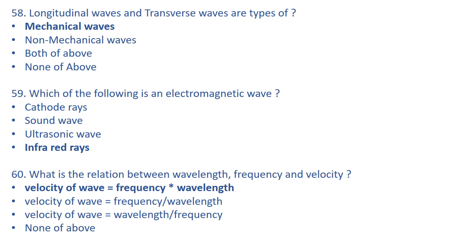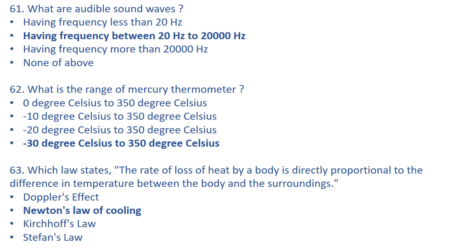The velocity of a wave is equal to frequency multiplied by wavelength. What are audible sound waves? They have frequency between 20 Hz and 20,000 Hz. Human beings can hear sounds within this range. Bats and dogs can hear frequencies less than 20 Hz, which is why they can detect things at night.